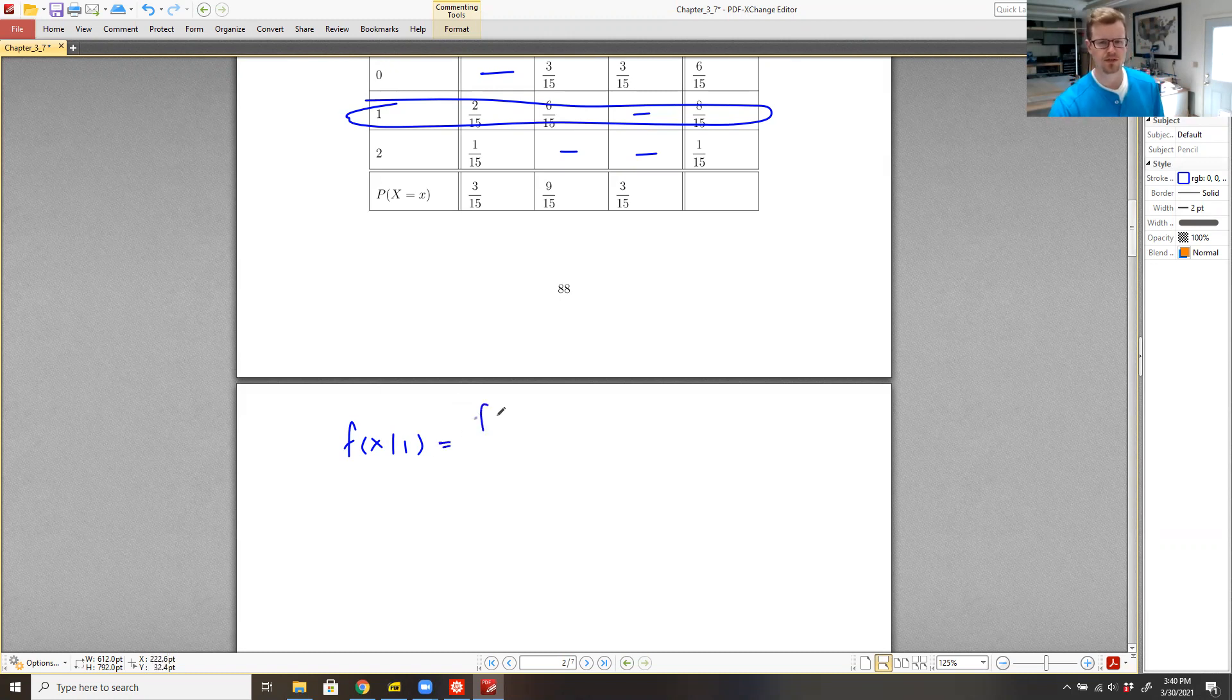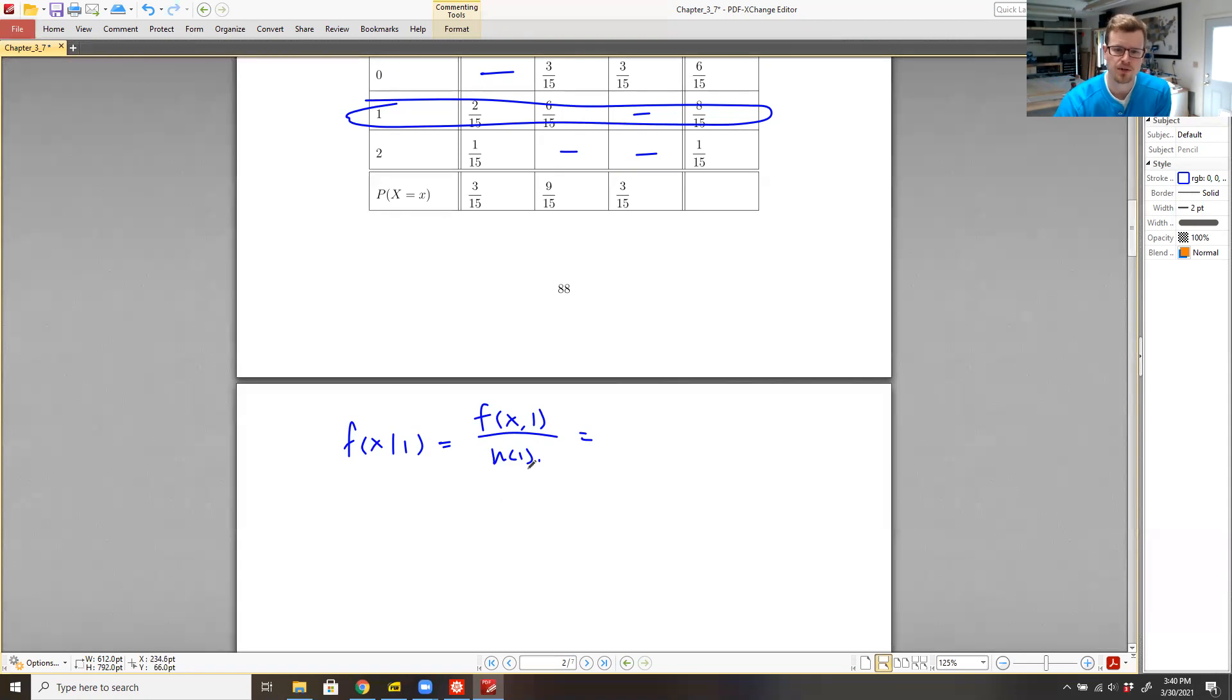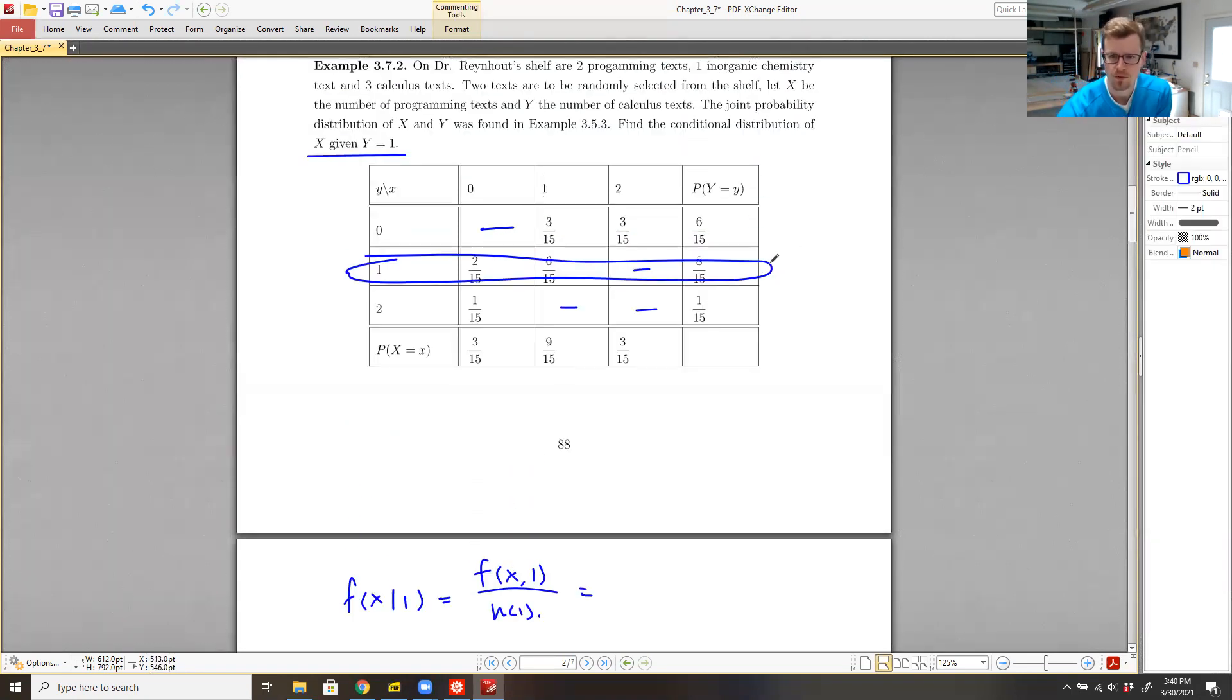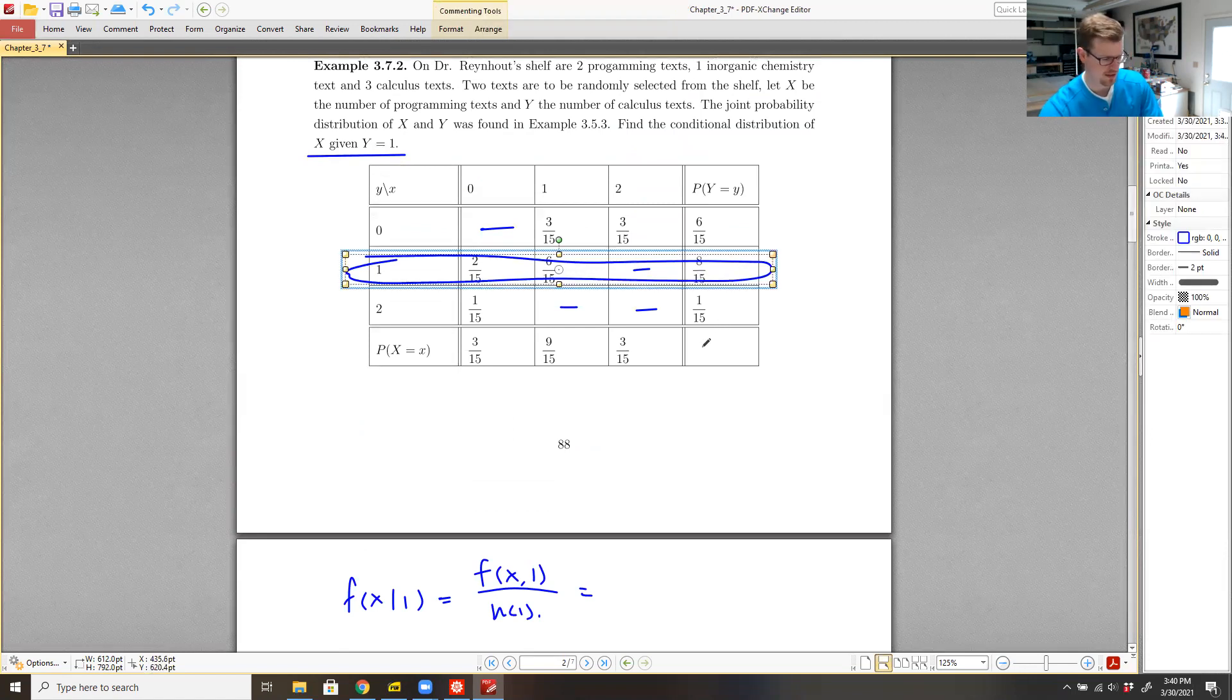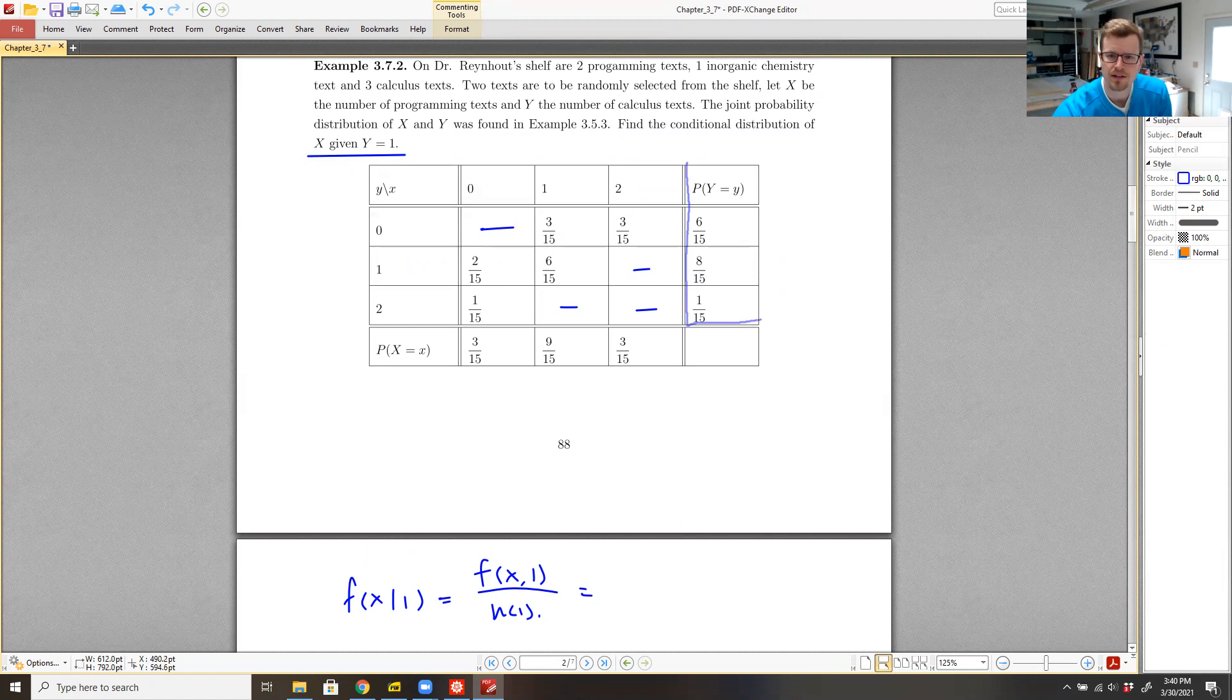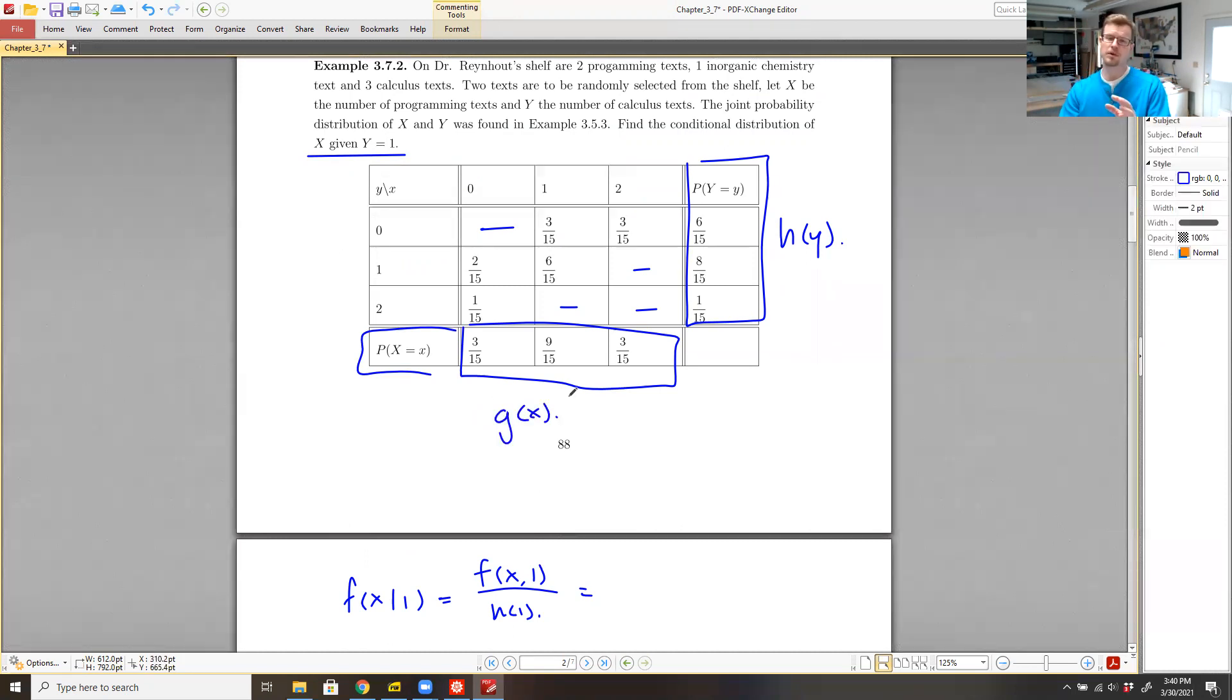So we have f of x given one, we want to find the conditional distribution of x, given that y is equal to one. And this is equal to f of x comma one, divided by h of one. And we can begin to fill this out. Do we know all the values of f of x comma one? Yes, of course. Those are these three values here. And then do we know the value of h of one? Yes, we do. This column here gives the marginal distribution of y. So this is h of y. And of course, this is g of x. So we have our marginal distributions.